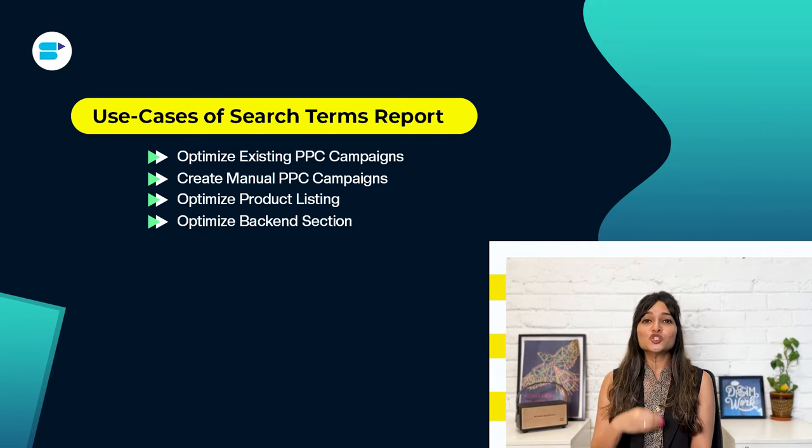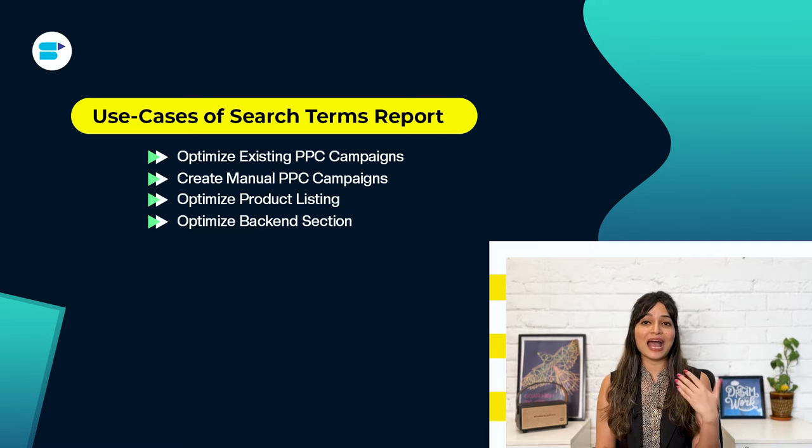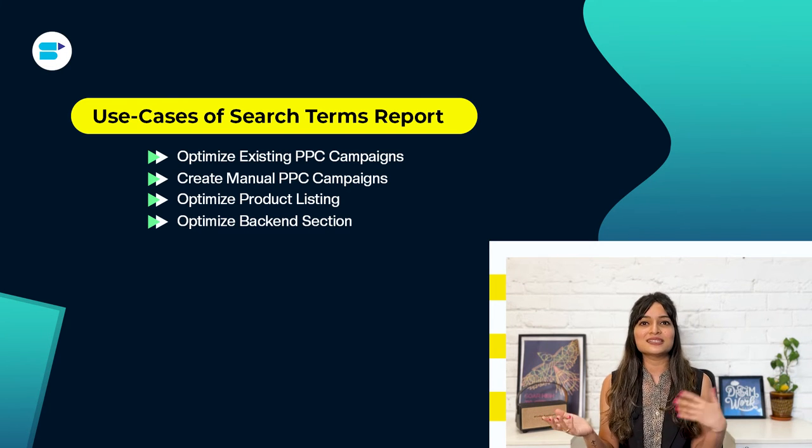Fourth, optimize the backend section. To boost traffic and make your product more relevant, you can optimize backend search terms using the Amazon search terms report. In this section, you can include extra keywords that may not be suitable for your titles, descriptions, or bullet points. It's a great opportunity to enhance your listing's relevance by incorporating keywords that the Amazon search terms report highlights as converters. Examine the report, pick out the keywords that have performed well, and add these selected keywords to the backend section. In my experience, this improves your listing's visibility because Amazon indexes keywords from this section as well, making them useful for driving sales.